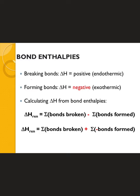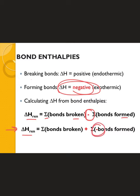To get the delta H of an entire reaction, we can look at a formula one of two ways. We need to sum all of the bonds that are broken and subtract all the bonds that are formed — the subtraction represents the negative delta H. Another way is to sum all of the bonds where the bonds formed are treated as negative, since they're exothermic. One word of caution: if you use the first formula with the subtraction already built in, don't overthink it and subtract a negative, which would make it positive and give you the wrong answer.